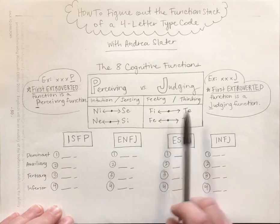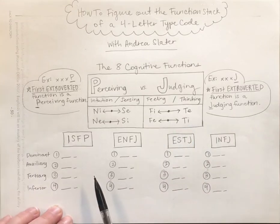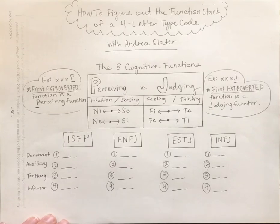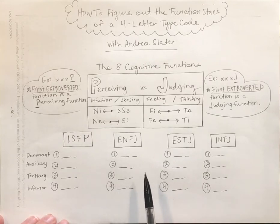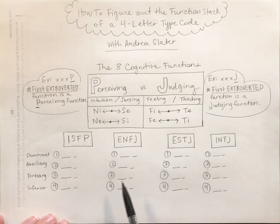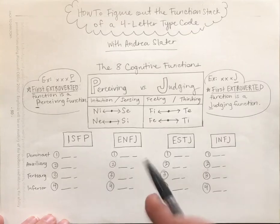Since the functions work in tandem with each other, they're always trying to establish a balance. You'll notice that every type alternates between introverted and extroverted functions. So if your first function is extroverted, your second function will be introverted, your third will be extroverted, and your fourth will be introverted — it just alternates back and forth.